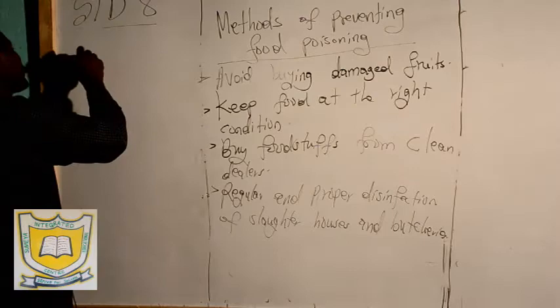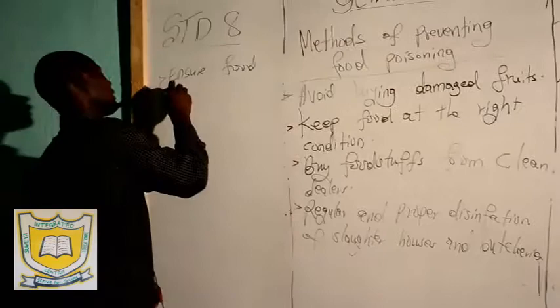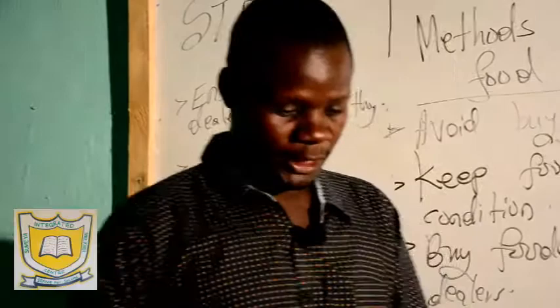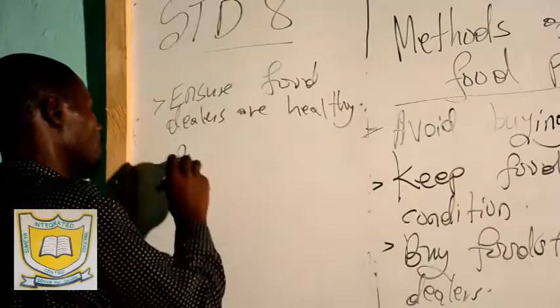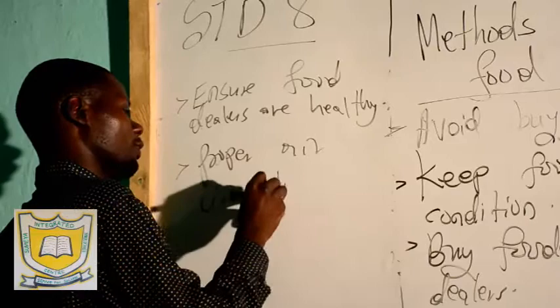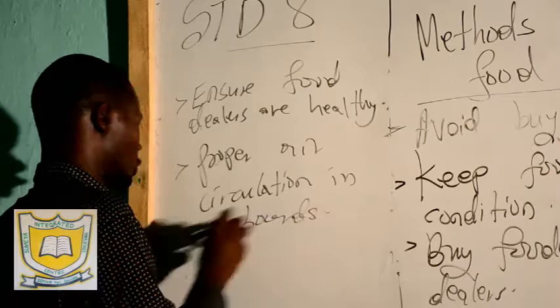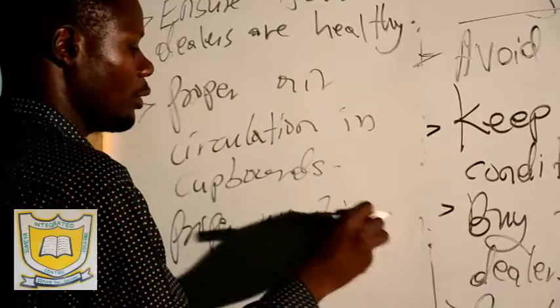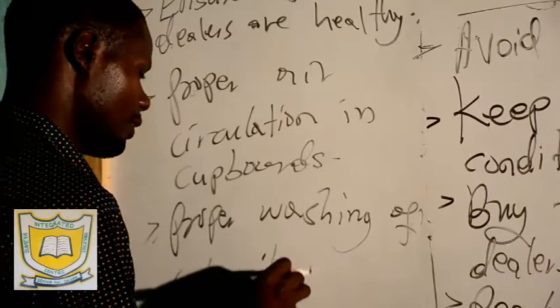Ensure food dealers are healthy — they should be healthy and not infected with diseases. Proper air circulation in cupboards. Then we have proper washing of utensils and dishes.